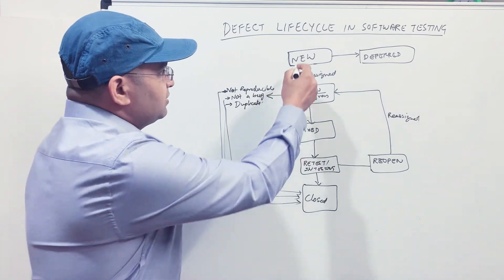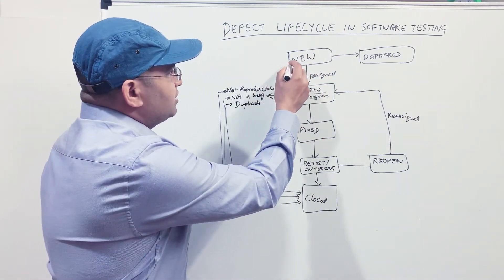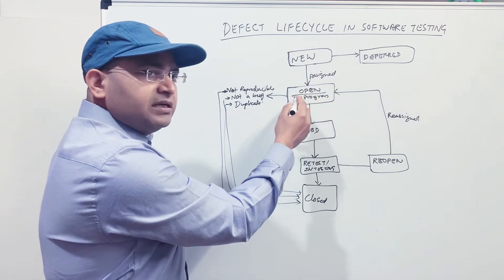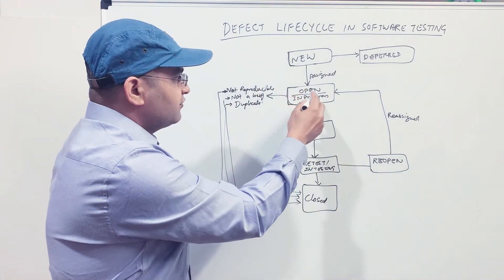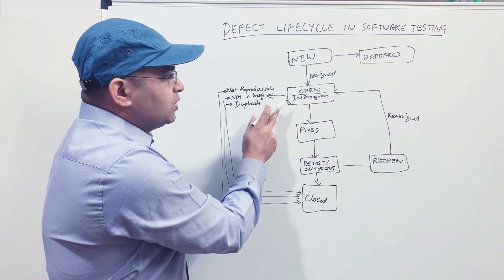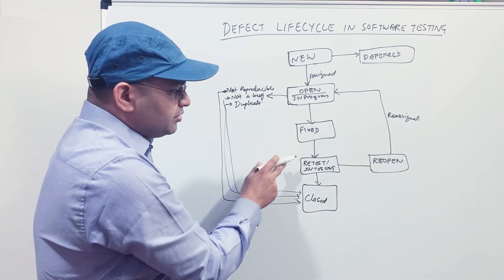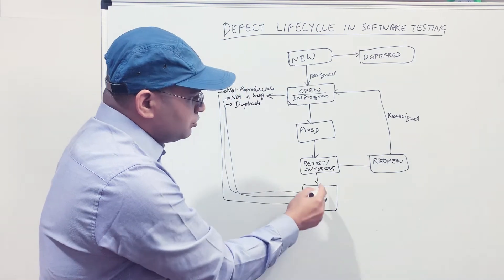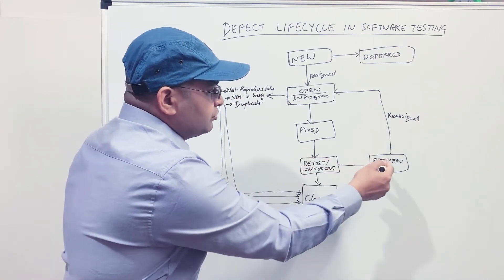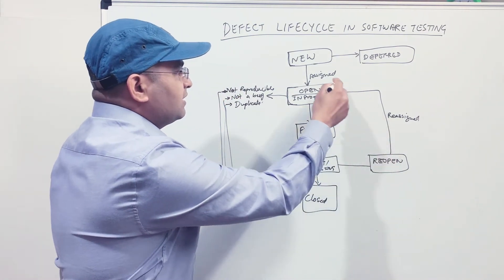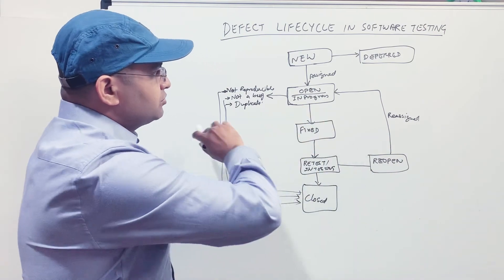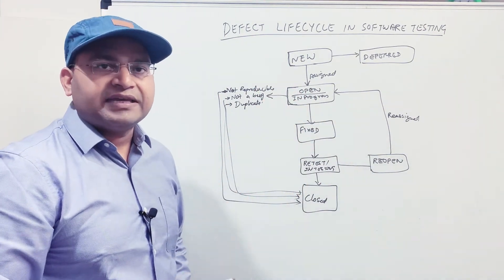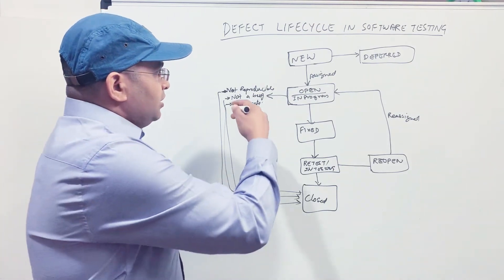To summarize the positive flow: a new defect is raised, it gets assigned, the developer analyzes and fixes it, the software tester retests it, and if the retest passes the defect is closed. If the retest fails, it is moved to Reopen and follows the same process again.